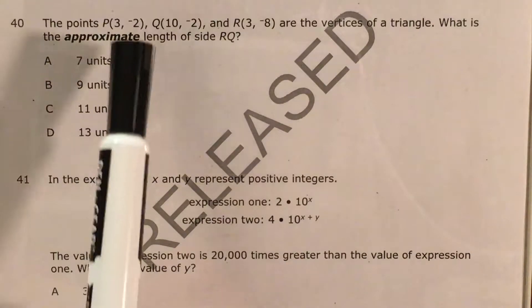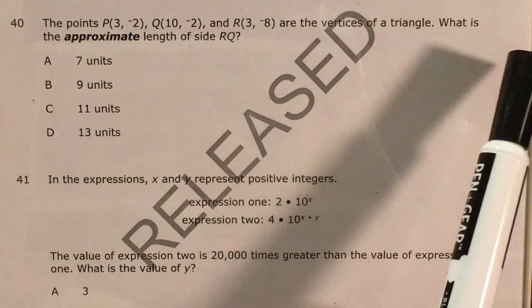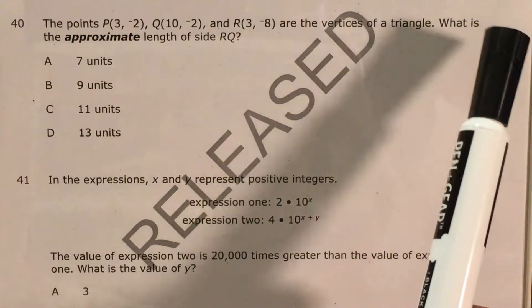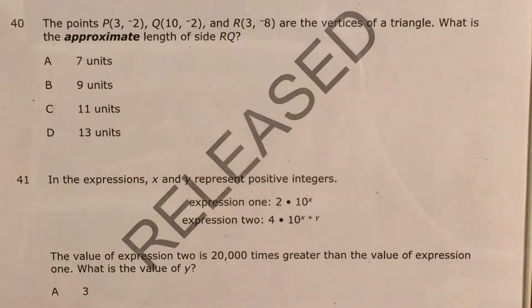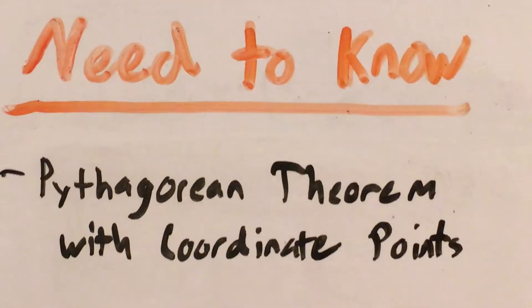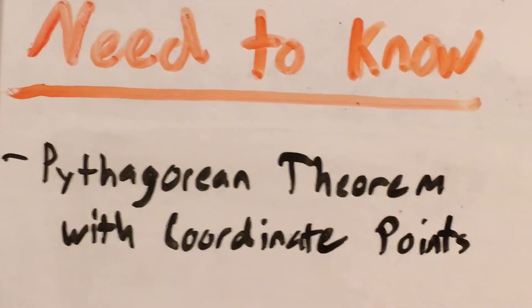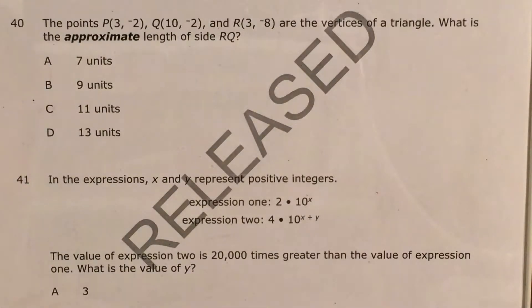The question gives us points P, Q, and R and tells us that they're the vertices of a triangle and we're supposed to find the approximate length of side RQ. This question is going to make us do the Pythagorean theorem again with coordinate points so let's go ahead and start with that.